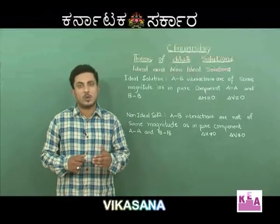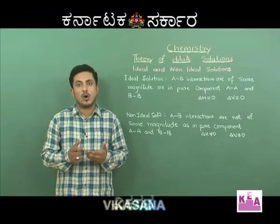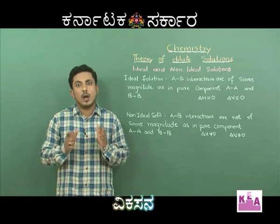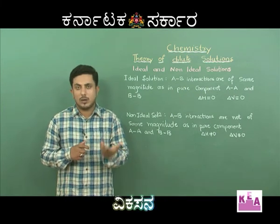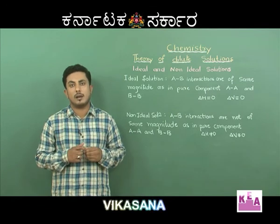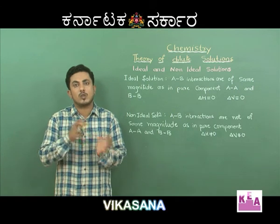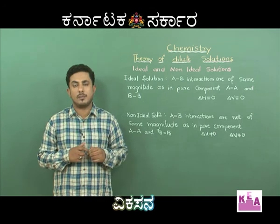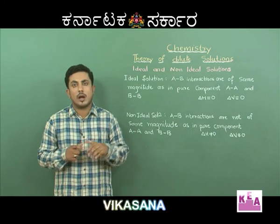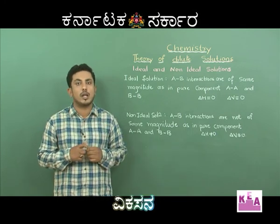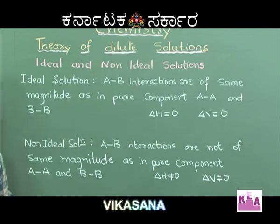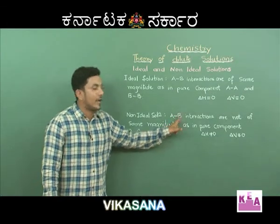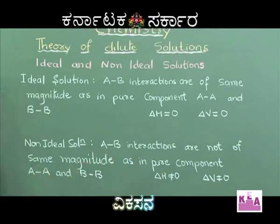Solutions can be classified into ideal solutions and non-ideal solutions depending on whether they obey Raoult's law. Ideal solutions obey Raoult's law at all conditions of concentration and temperature, whereas non-ideal solutions do not. For ideal solutions, the A-B interactions are of the same magnitude as the pure component A-A and B-B interactions. In non-ideal solutions, the A-B interactions are not of the same magnitude as A-A and B-B.